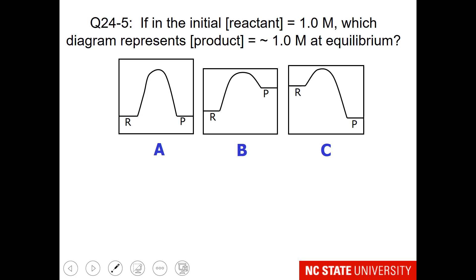Here is a question that sometimes confuses students. If the initial reactant concentration is 1 molar, which diagram represents product at approximately 1 molar at equilibrium? I am going to remind you of ICE tables to help solve this.